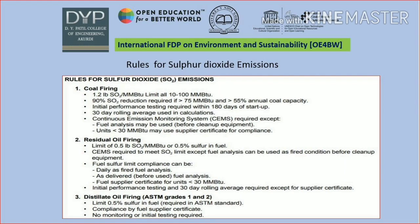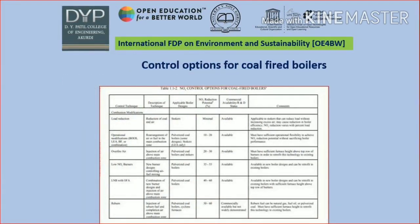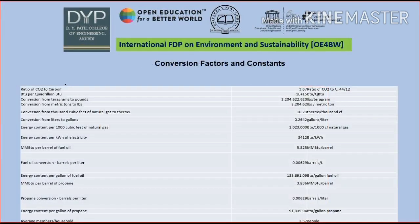Next are the coal control options for coal fired boilers — covering the levels of nitrogen oxides and carbon monoxides. Here we also discuss the conversion factors for constants: the ratio of carbon dioxide to carbon, and the conversion from gallons — the ratio of carbon monoxide to barrels of fuel and barrels per litre.